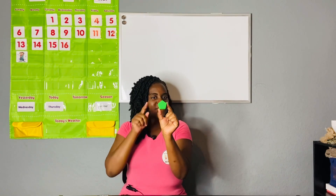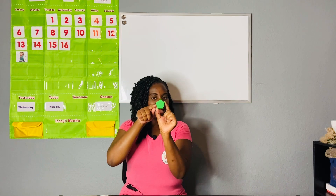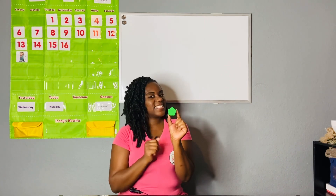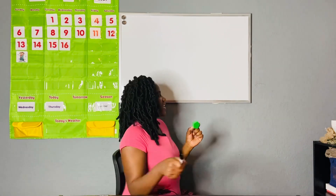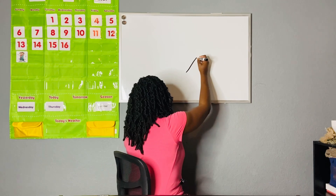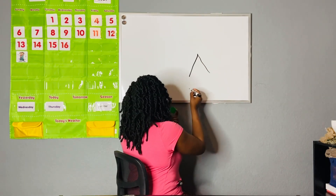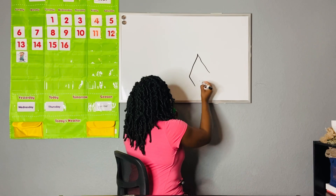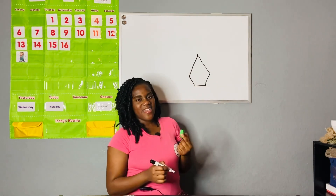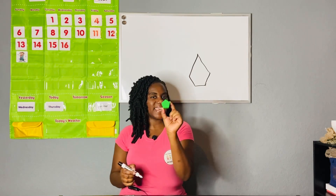What is the name of the shape that has the pointy top? Did you say a pentagon? If you said pentagon, you are correct! Let's draw our pentagon. Remember, our pentagon has a pointy top like a triangle, then we make a line going down, and we have our box on the bottom. That is our pentagon.